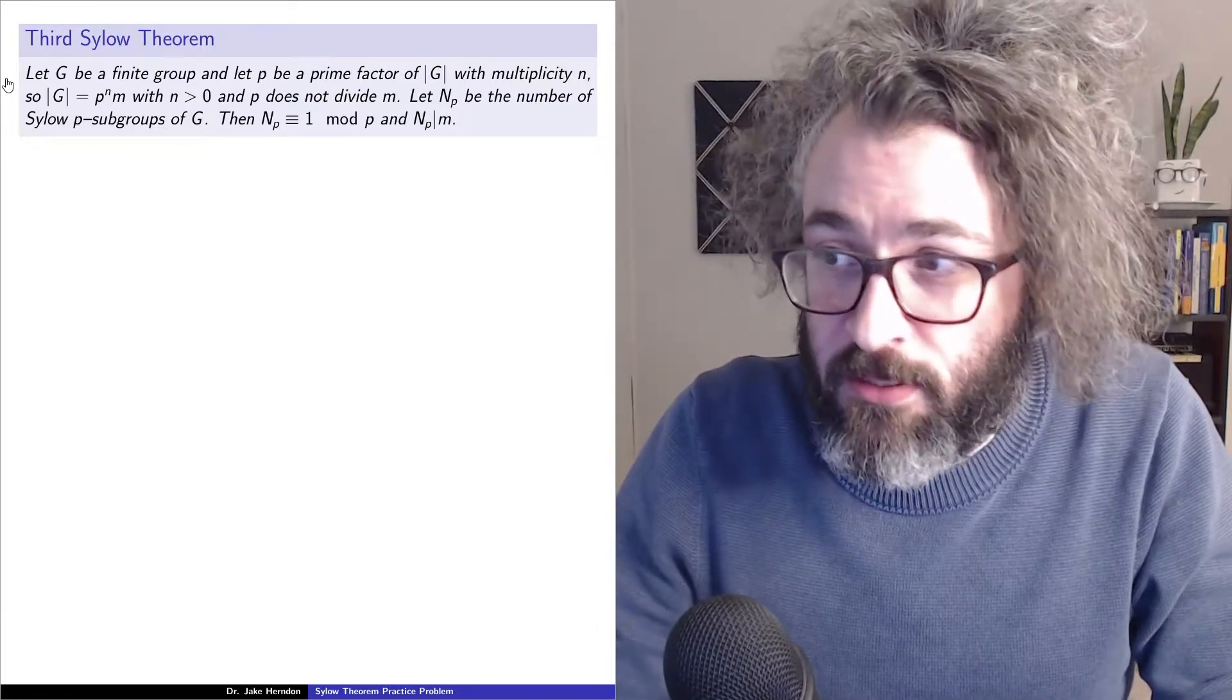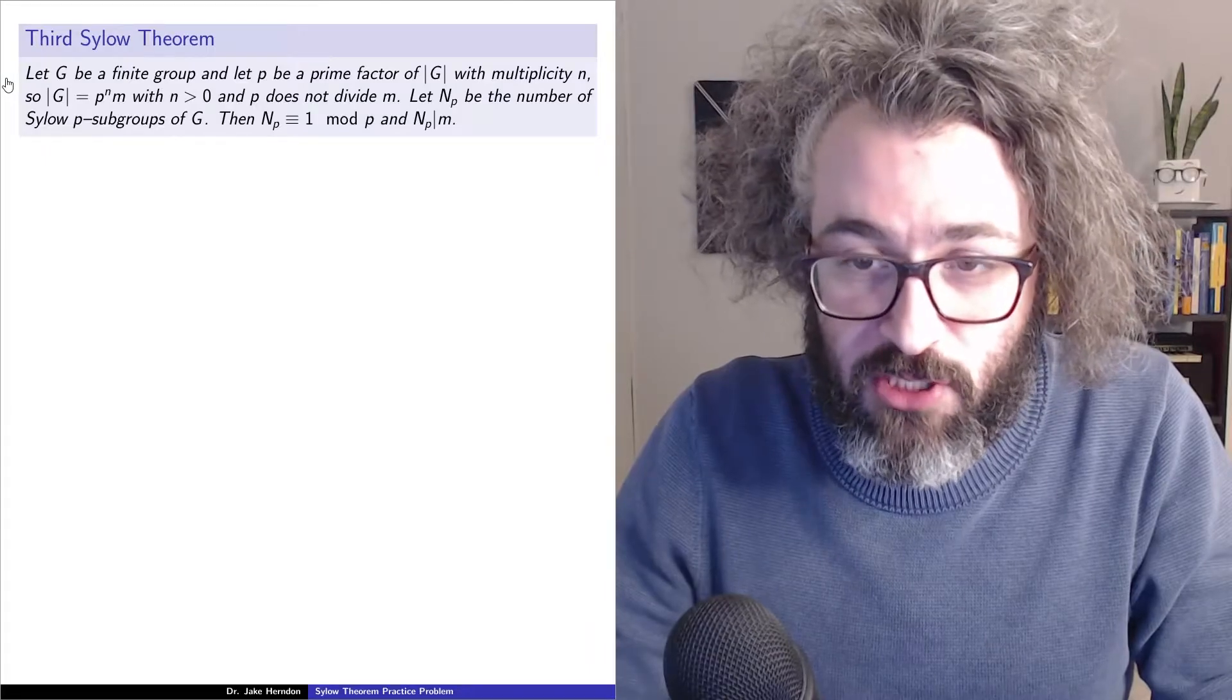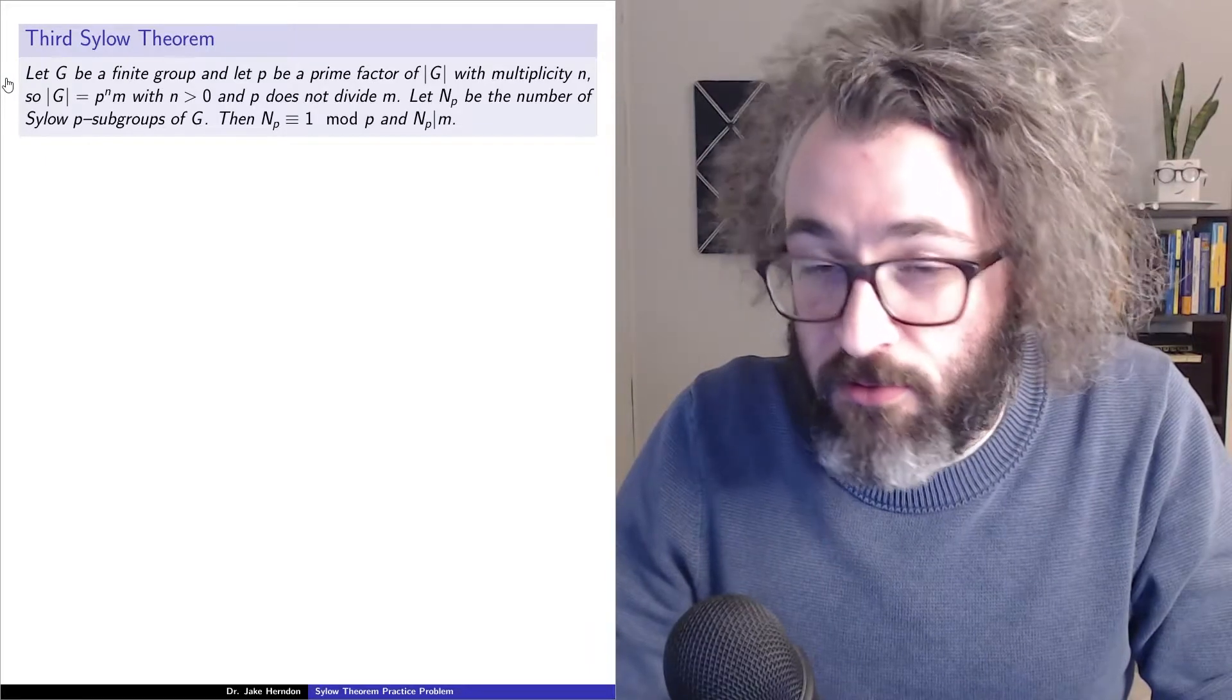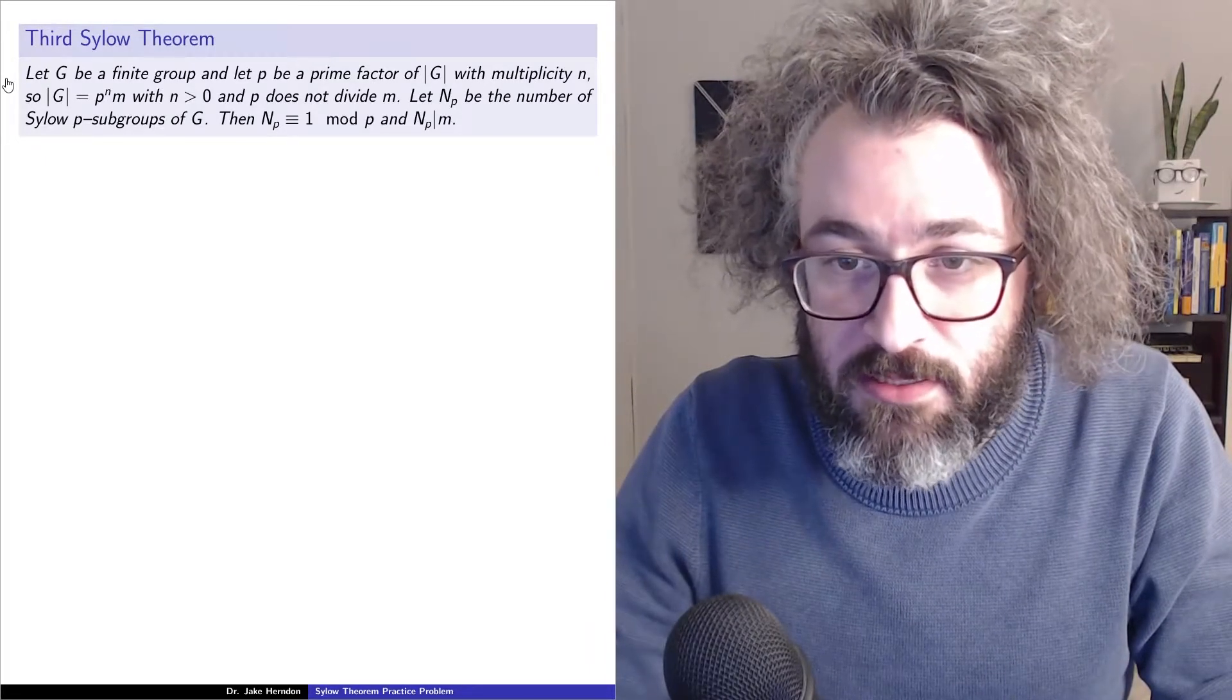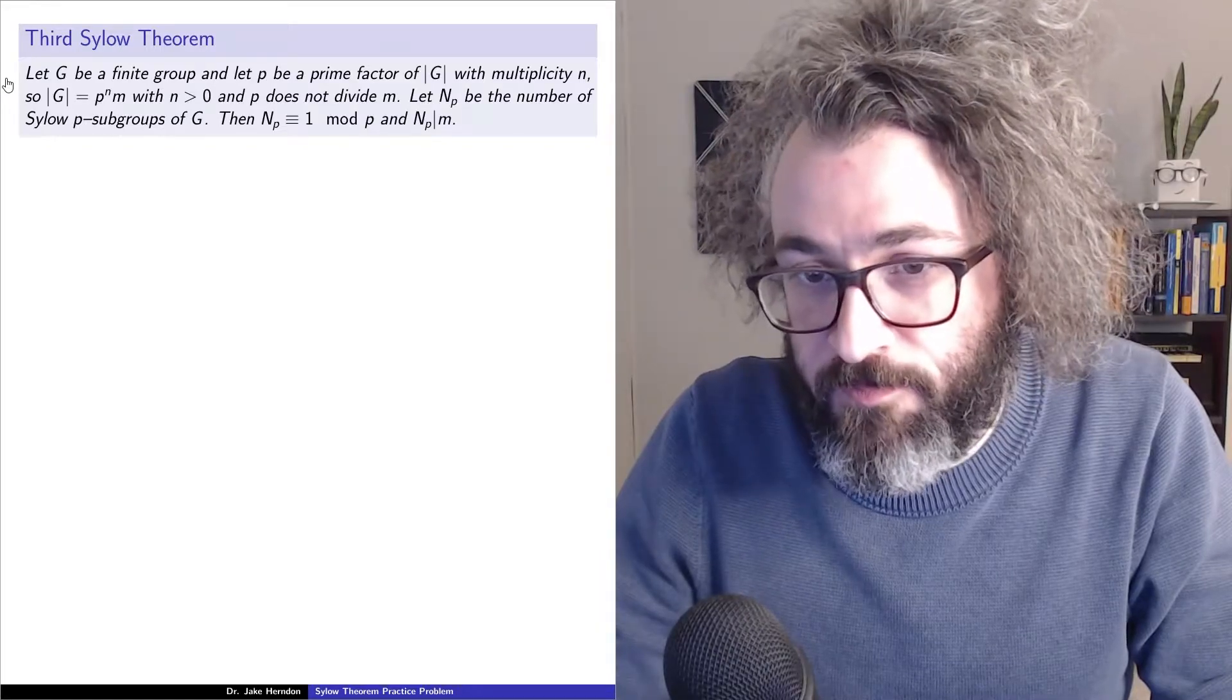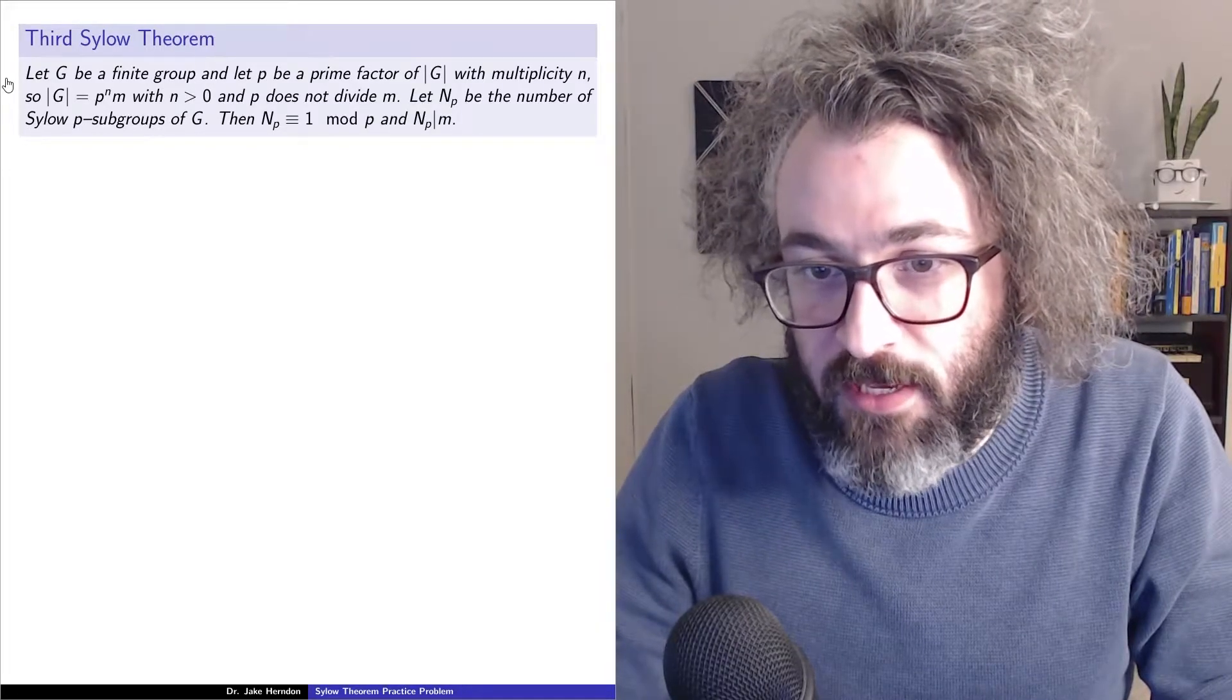Let n_p be the number of Sylow p subgroups of G. Then the conclusion is n_p is congruent to 1 mod p, and n_p divides m.